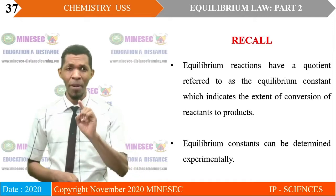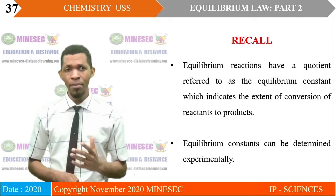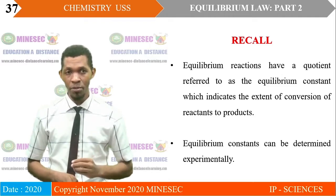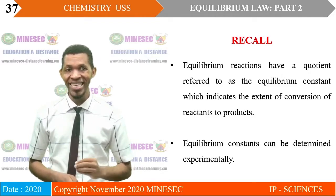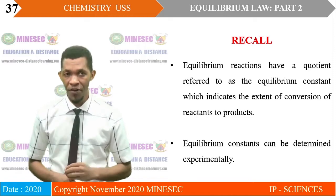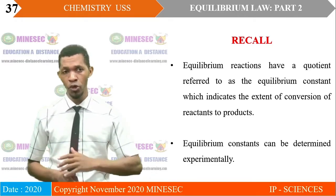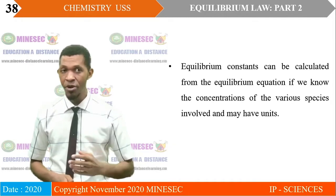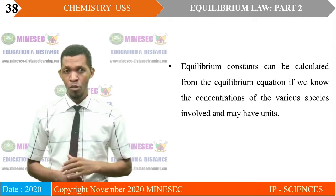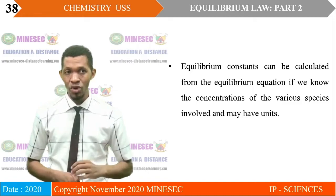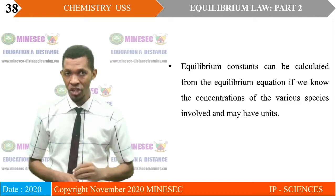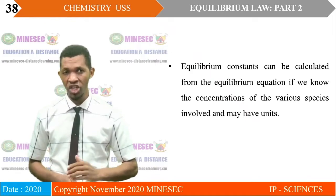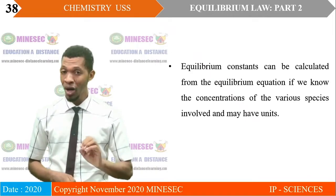It is important to remember that equilibrium reactions have a quotient referred to as the equilibrium constant, which indicates the extent of conversion of reactants to products. The equilibrium constant can be determined experimentally or calculated from the equilibrium equation if we know the concentrations of the various species involved, and may also have units.